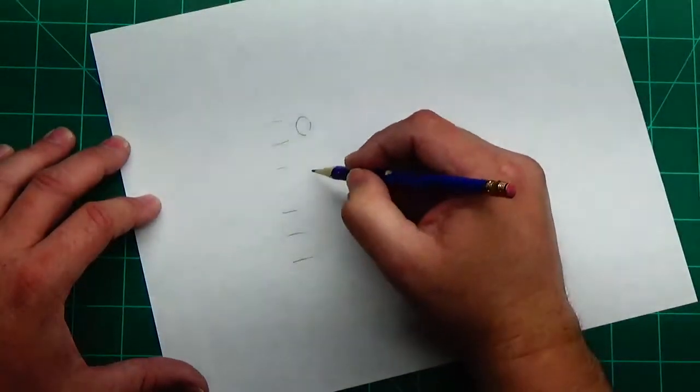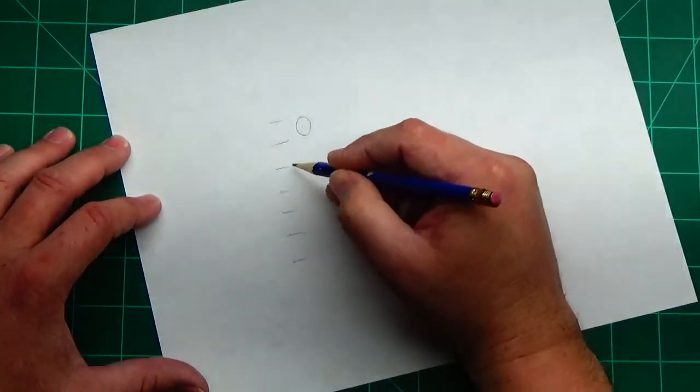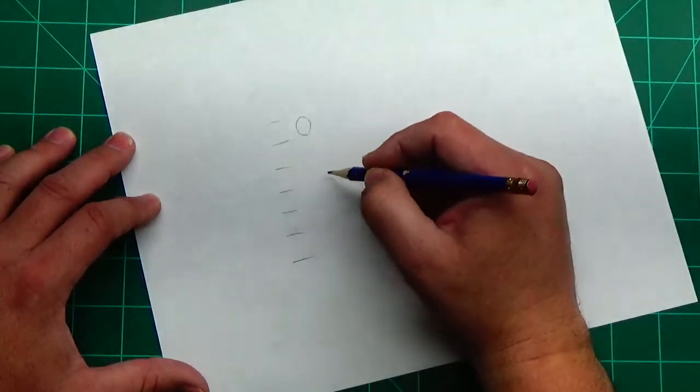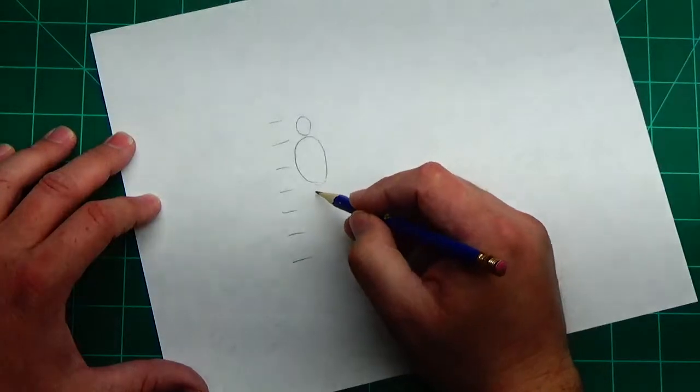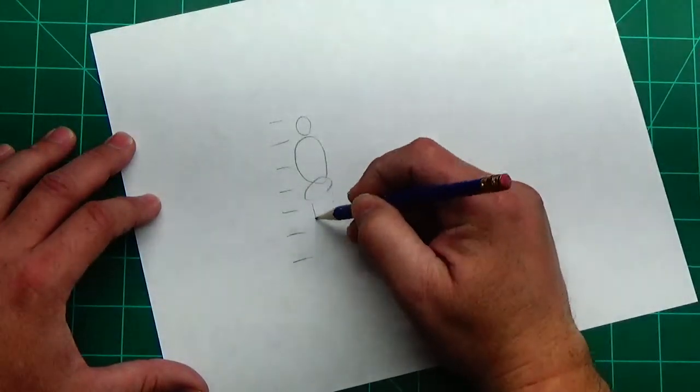And the way you figure that out is you draw their torso. The next two measurements here is going to be your torso. You've got your hips, which come in the middle, and the rest is your legs.